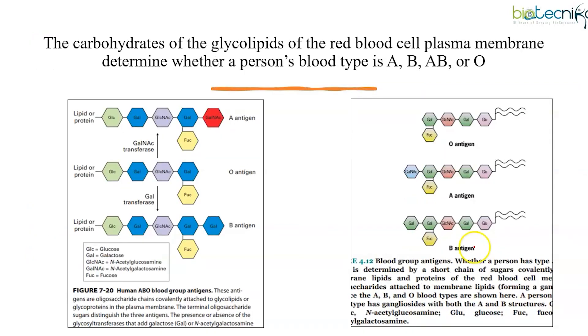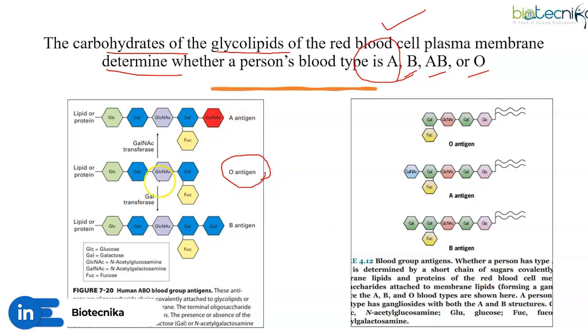Always remember one thing: the carbohydrates that are present on the glycolipids of RBC plasma membrane will determine whether a person's blood type is A, B, AB, or O. And O antigen is the parental one, that means from where A antigen and B antigen are synthesized.